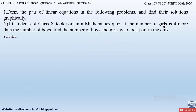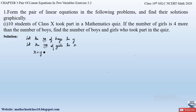Since we have to find out the number of girls and number of boys, let us assume the number of girls to be x and the number of boys to be y. Since there were 10 students total, our first equation is: x + y = 10. The second equation comes from the condition that the number of girls is 4 more than the number of boys: x = 4 + y.